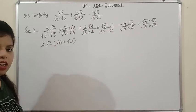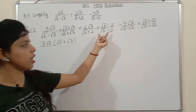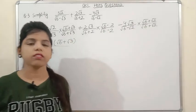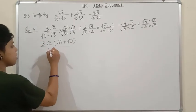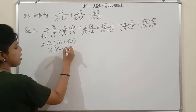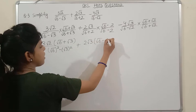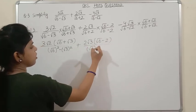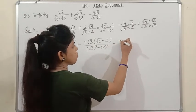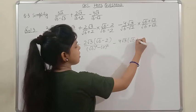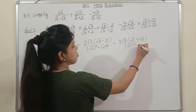For the first term: denominator is (√6 − √3), so multiply and divide by (√6 + √3). For the second term: denominator is (√6 + 2), so multiply and divide by (√6 − 2). For the third term: denominator is (√6 − √2), so multiply and divide by (√6 + √2). The denominator in each case becomes (a−b)(a+b) = a² − b².